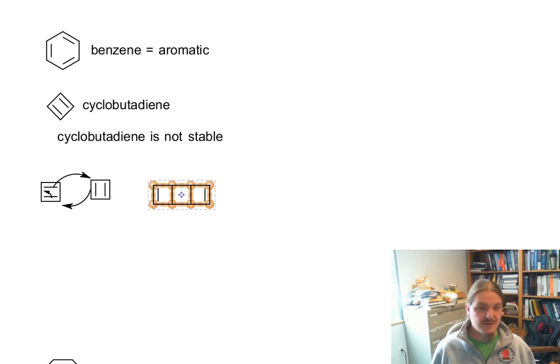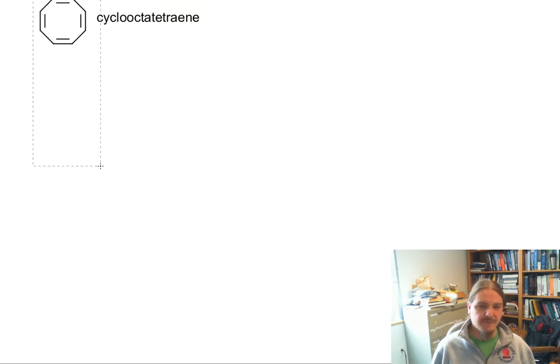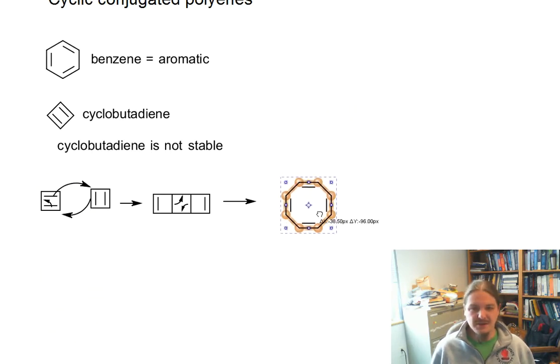And if you think this thing looks strained, that's because it is. This thing undergoes an electrocyclic ring expansion in the middle here to form, get ready for it, cyclooctetraene.